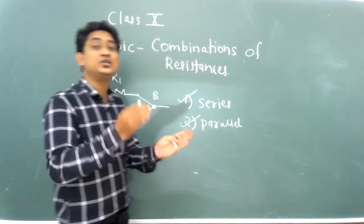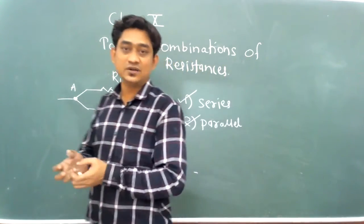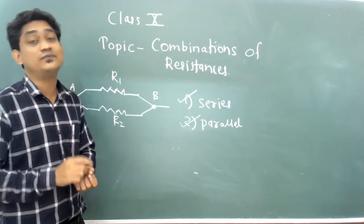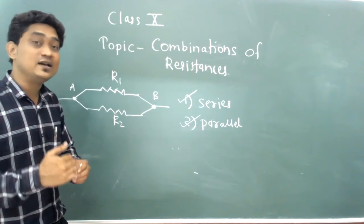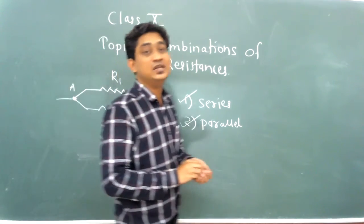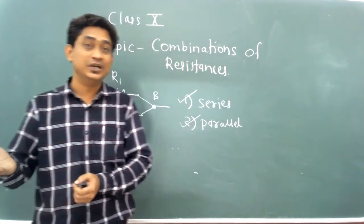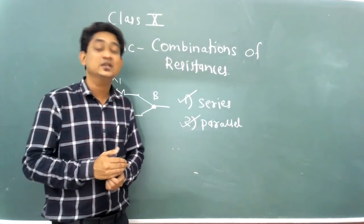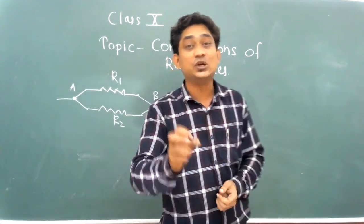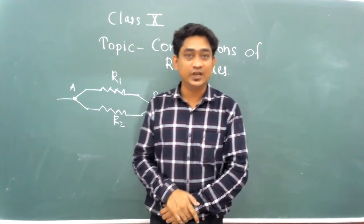So these are the combinations of resistances, which are very very important for numericals. Remember, the work of resistance is to oppose the current. In the next video, we will see the conditions for series and parallel combinations with respect to current flowing and potential difference across each resistor. Thank you very much.